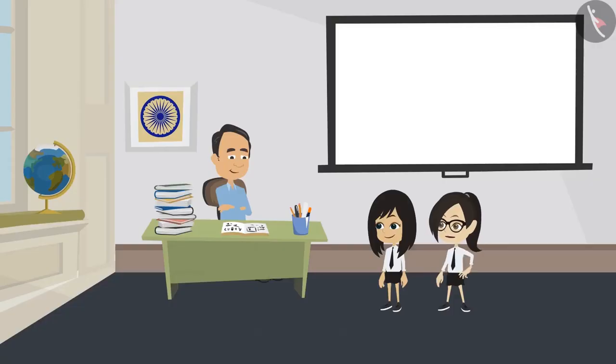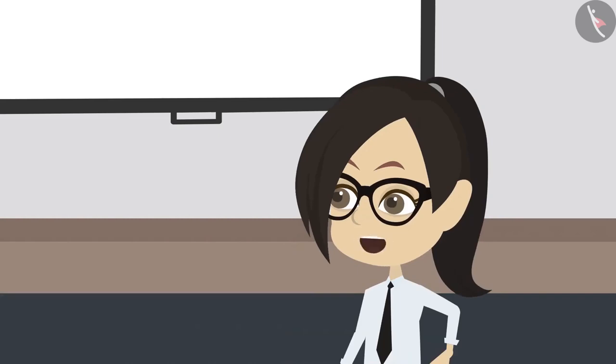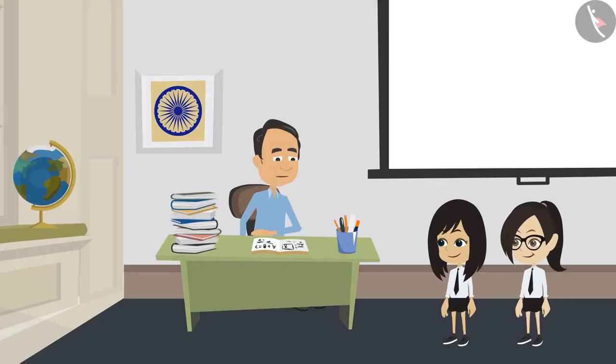This means when we know the radius or diameter of a circle, we can tell whether it is big or small without looking at the circle. Yes, absolutely correct.